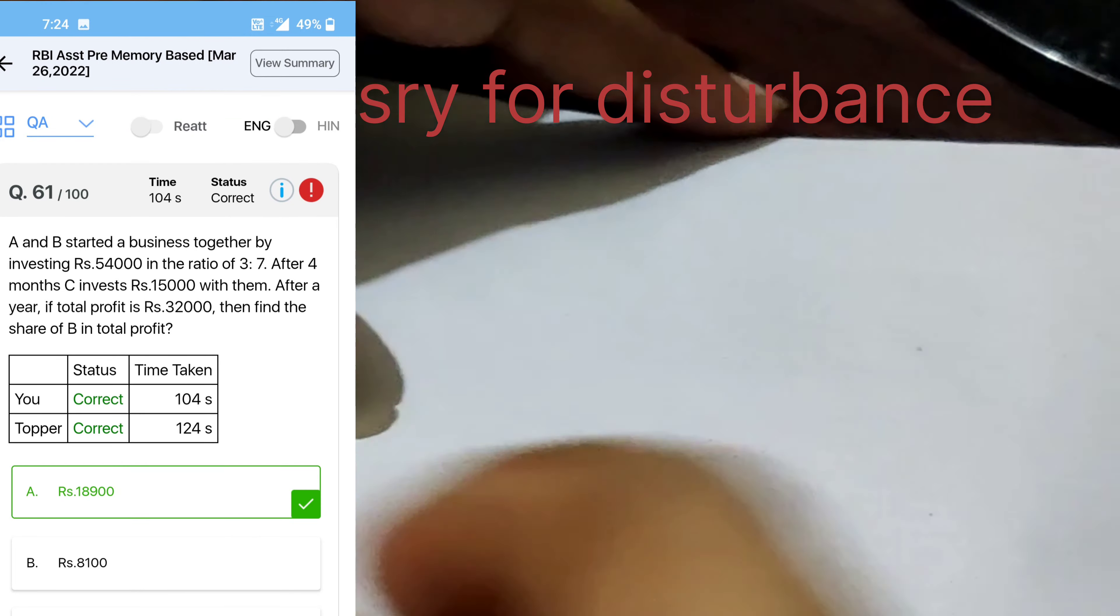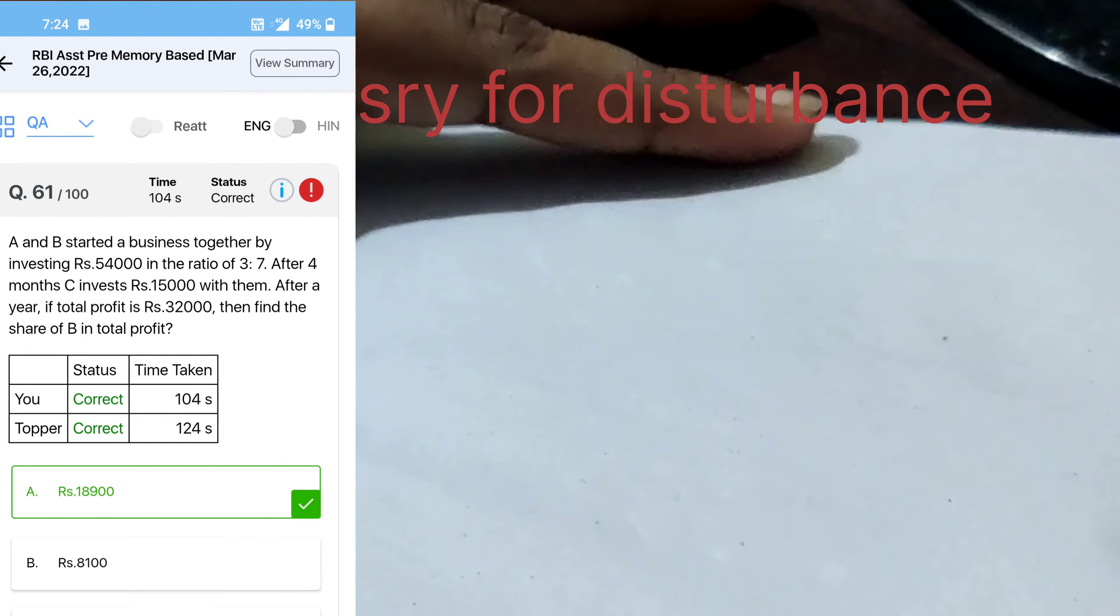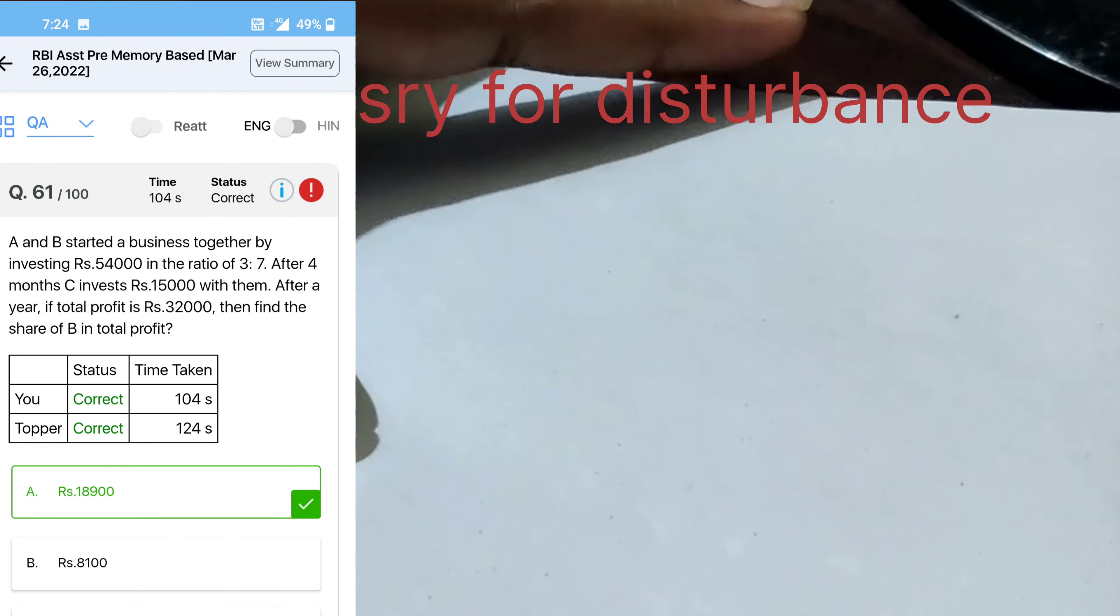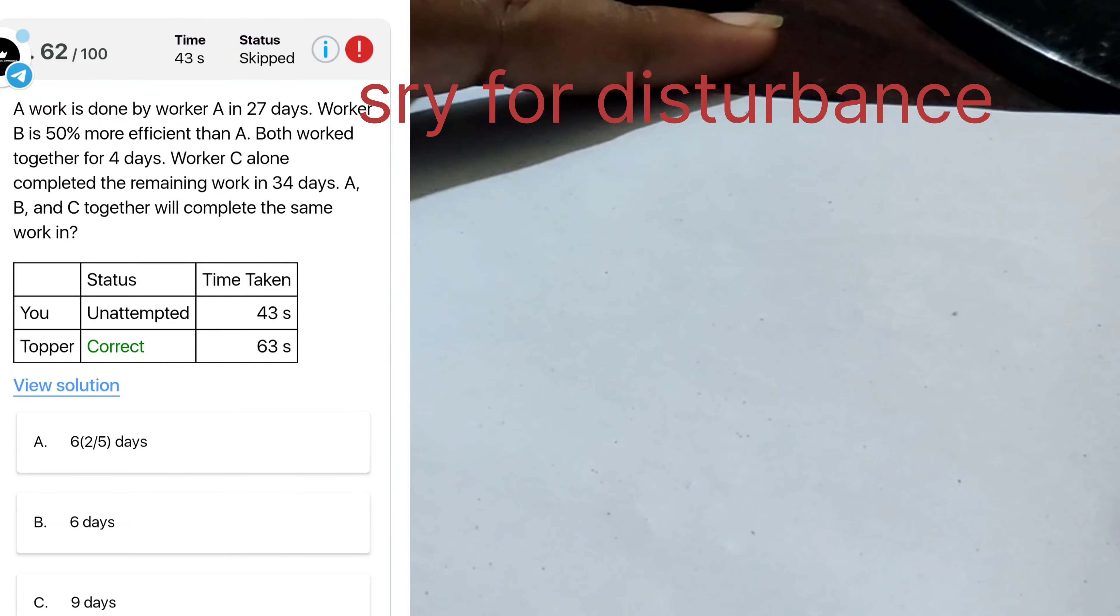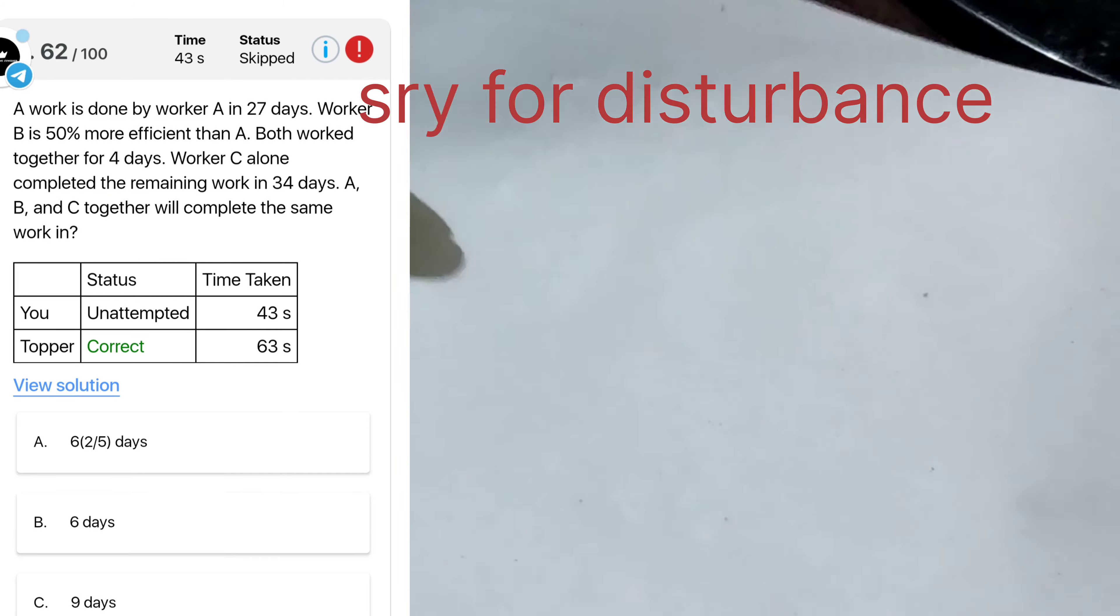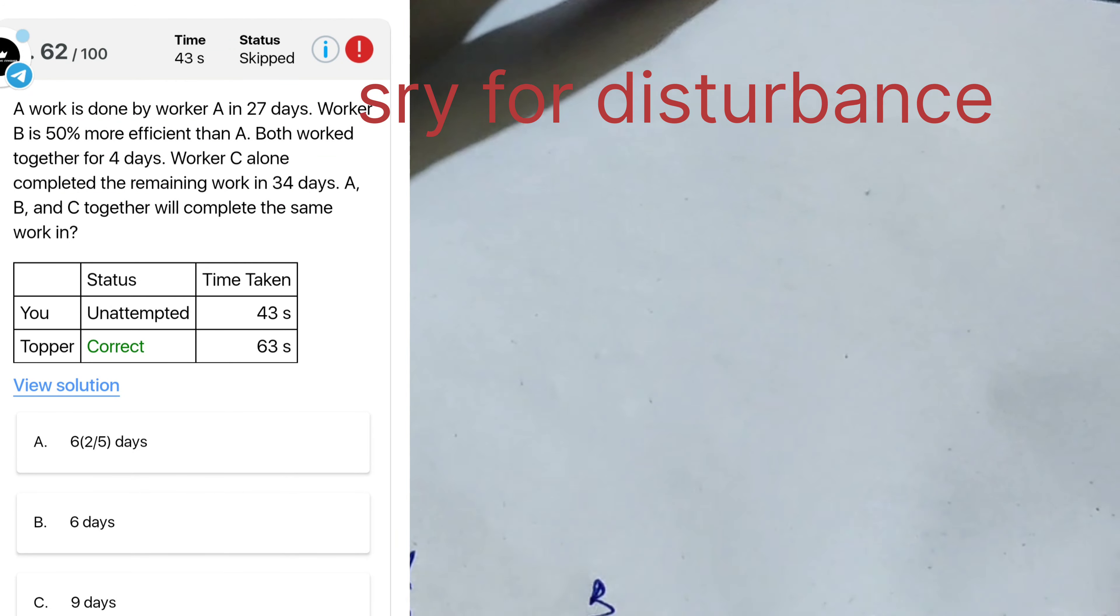Next question, A's work 27, B is 818. Both work 2420, and C how long complete the remaining 34 days. So it means 5 by 54 plus 1 by 44 is 5434.